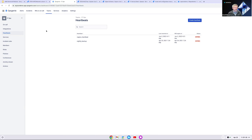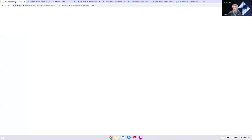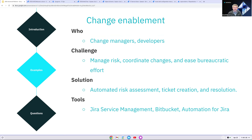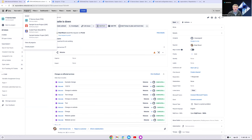OpsGenie is a very robust tool and can be really helpful for your incident management processes — getting notified as quickly as possible and getting somebody working on a solution. Now we're going to move into our last demo: change management. This is really tailored towards change managers and developers. The challenges are how to manage risk, coordinate changes, and ease bureaucratic effort. Our solution is automated risk assessment, ticket creation, and resolution. The tools we'll use are Jira Service Management, Bitbucket, and automation.